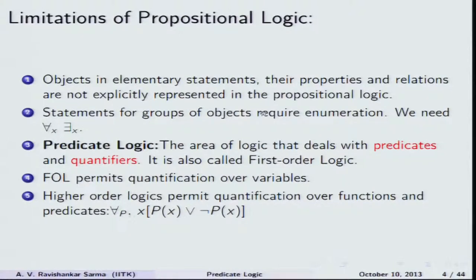In first-order logic, mortality is quantified over all human beings. If you take higher-order logics, they permit quantification over functions and predicates. If quantification happens only over variables, it is called first-order logic; if it happens over functions and predicates, it is called higher-order logic. This is one of the important differences between first-order logic and higher-order logics, but we will be restricting our attention to quantification over variables.